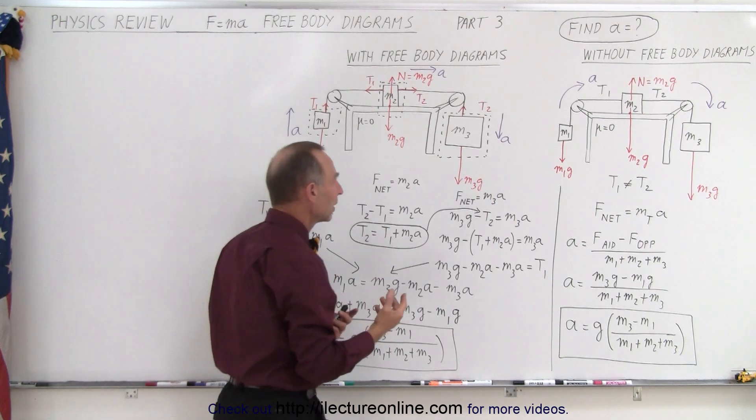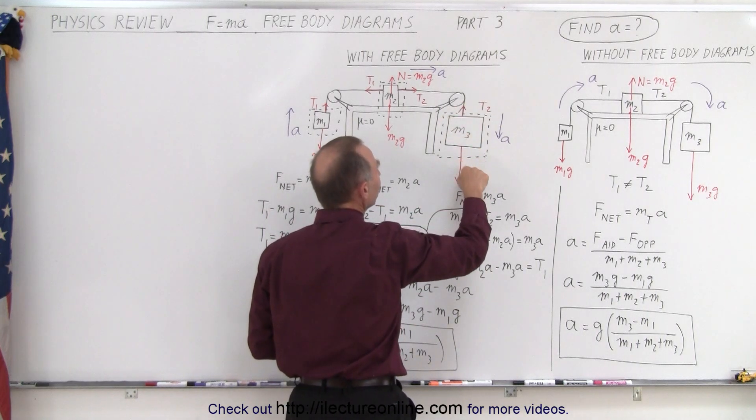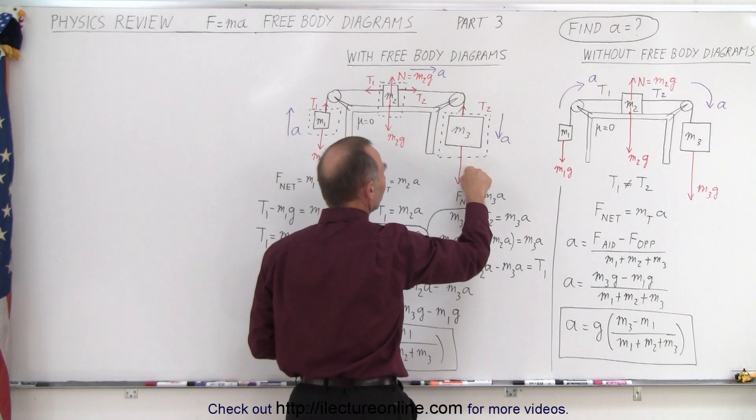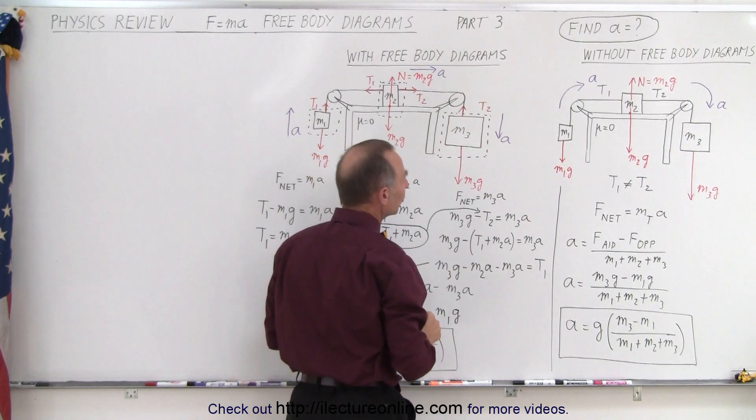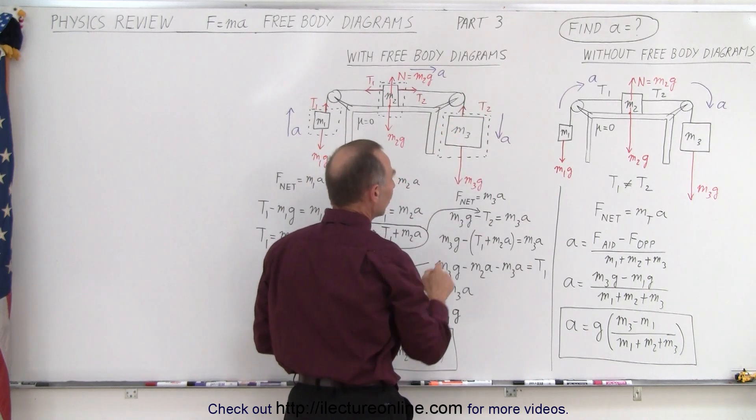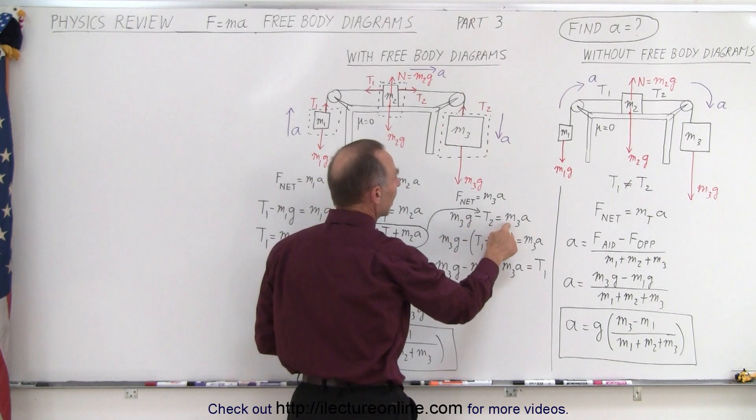On the third equation, again, we have two forces. One that is in the same direction as acceleration. This is the aiding force. This must, therefore, be the opposing force. It's in the opposite direction. So aiding minus opposing equals M3A.